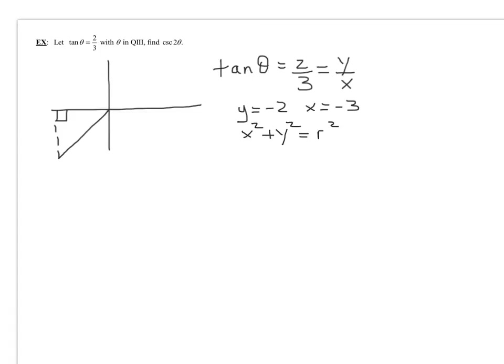x squared plus y squared equals r squared. Negative three all squared plus negative two all squared equals r squared. So nine plus four equals r squared. So 13 equals r squared. So r is the square root of 13. Remember, r is always a positive number.